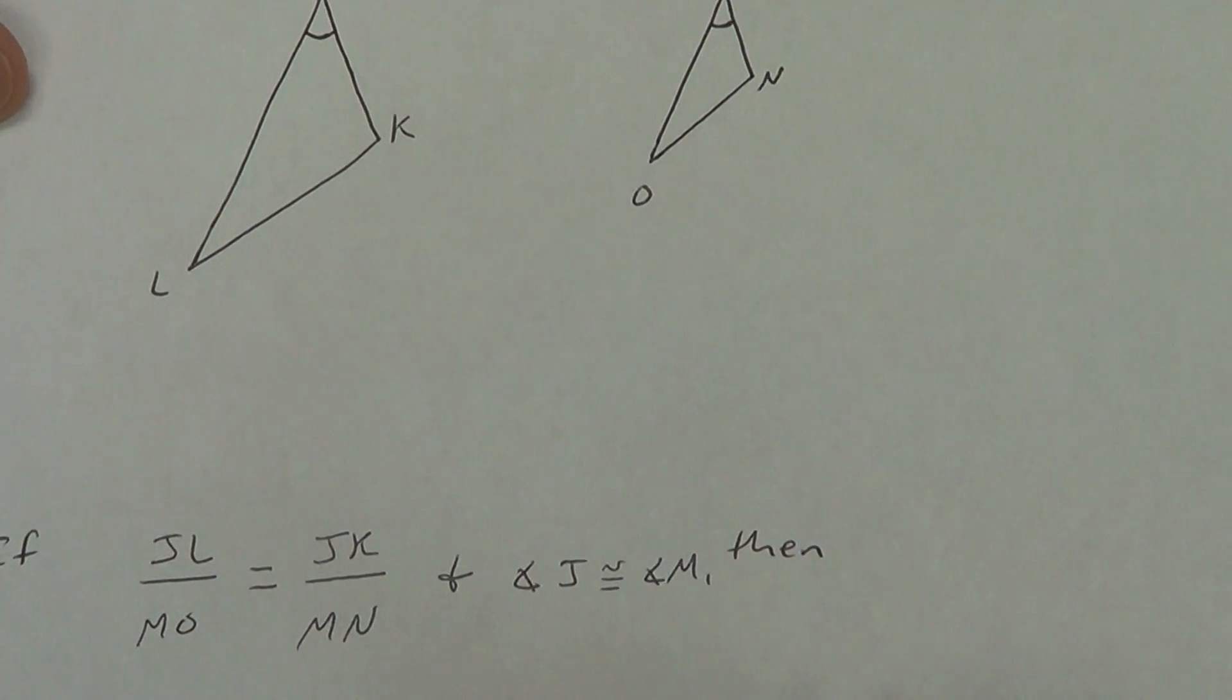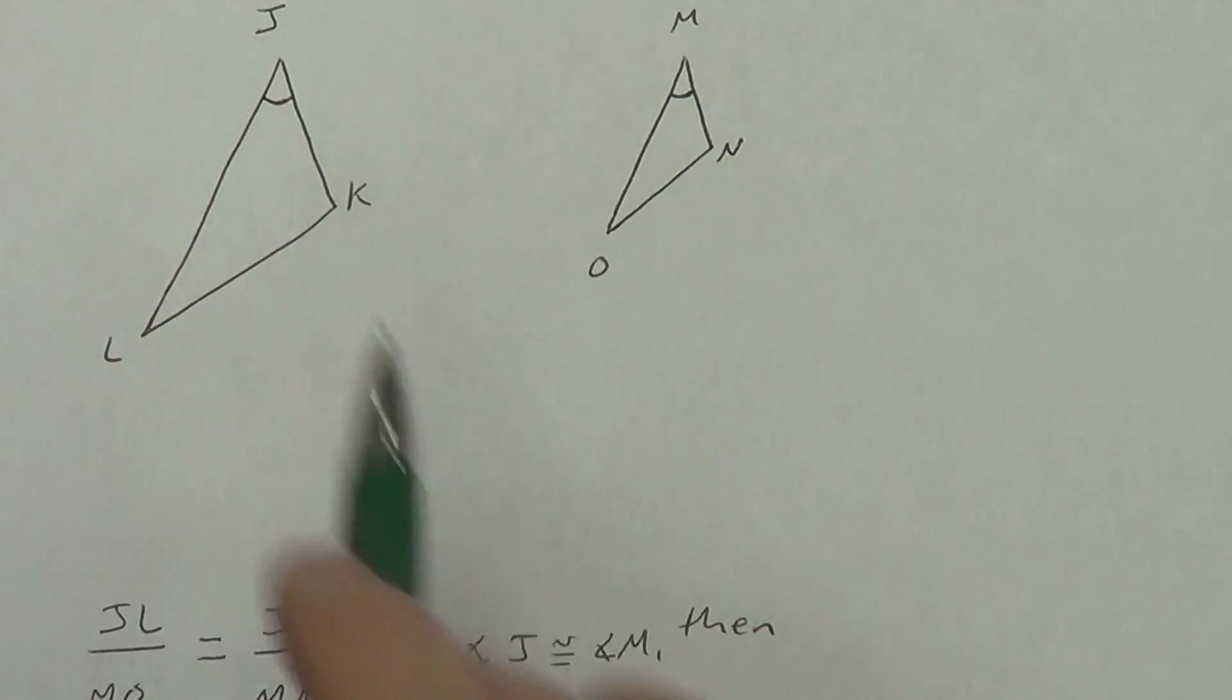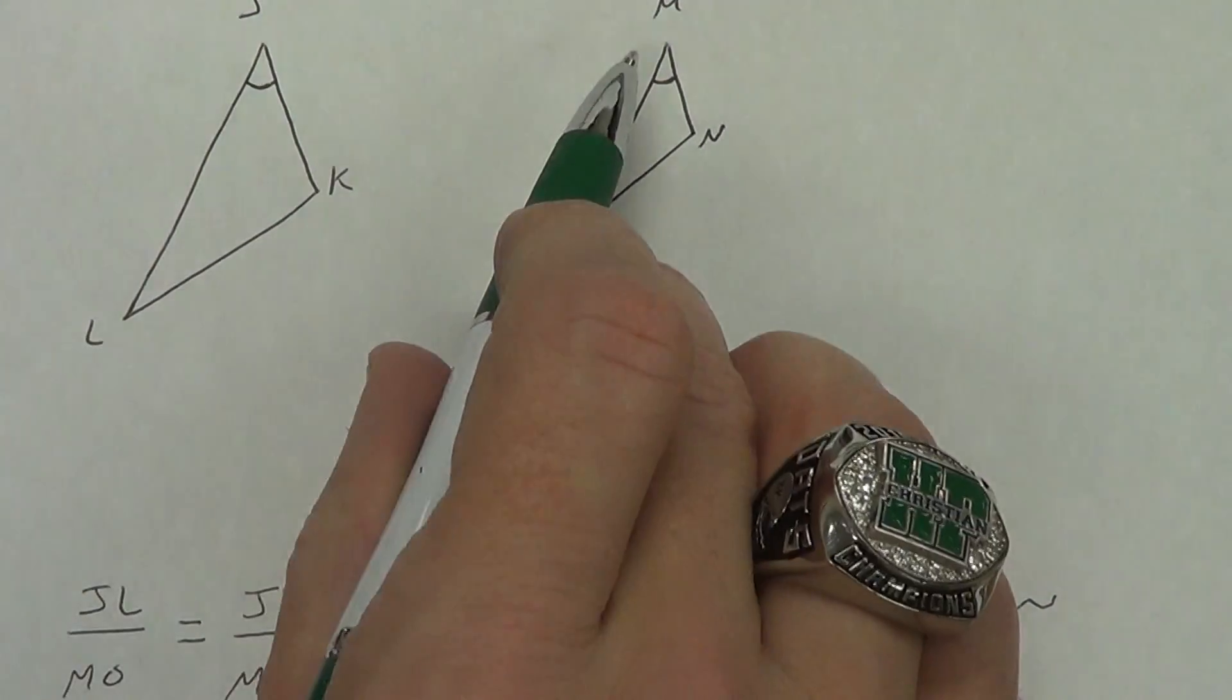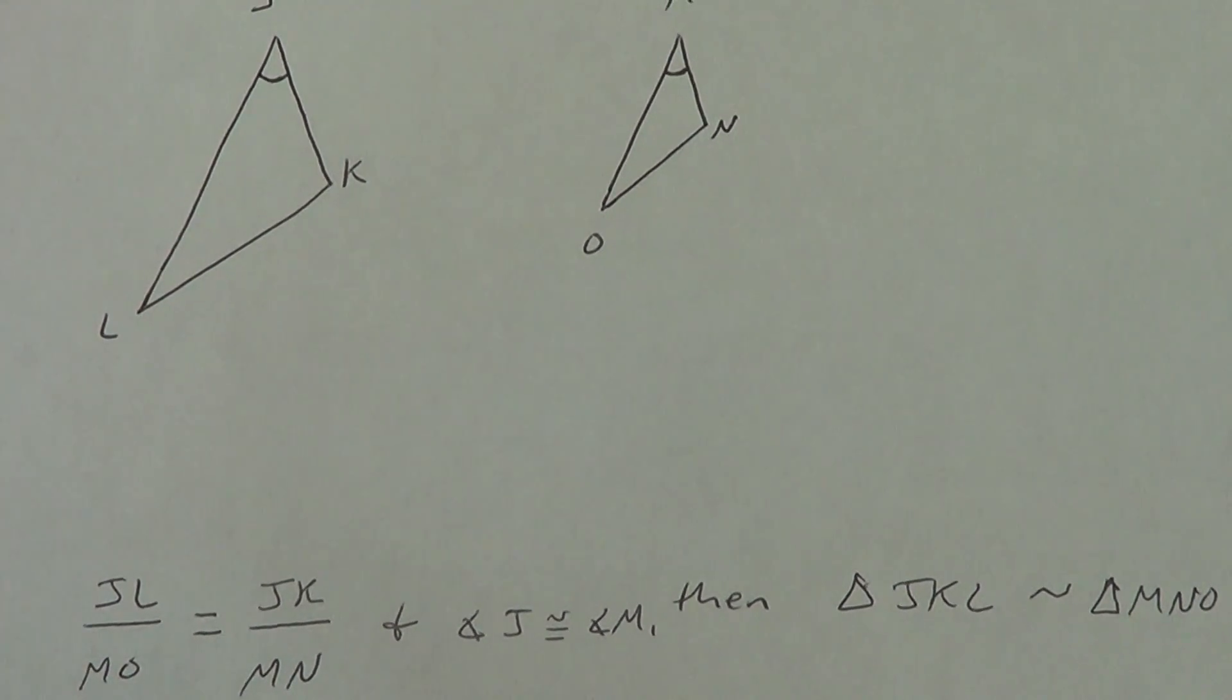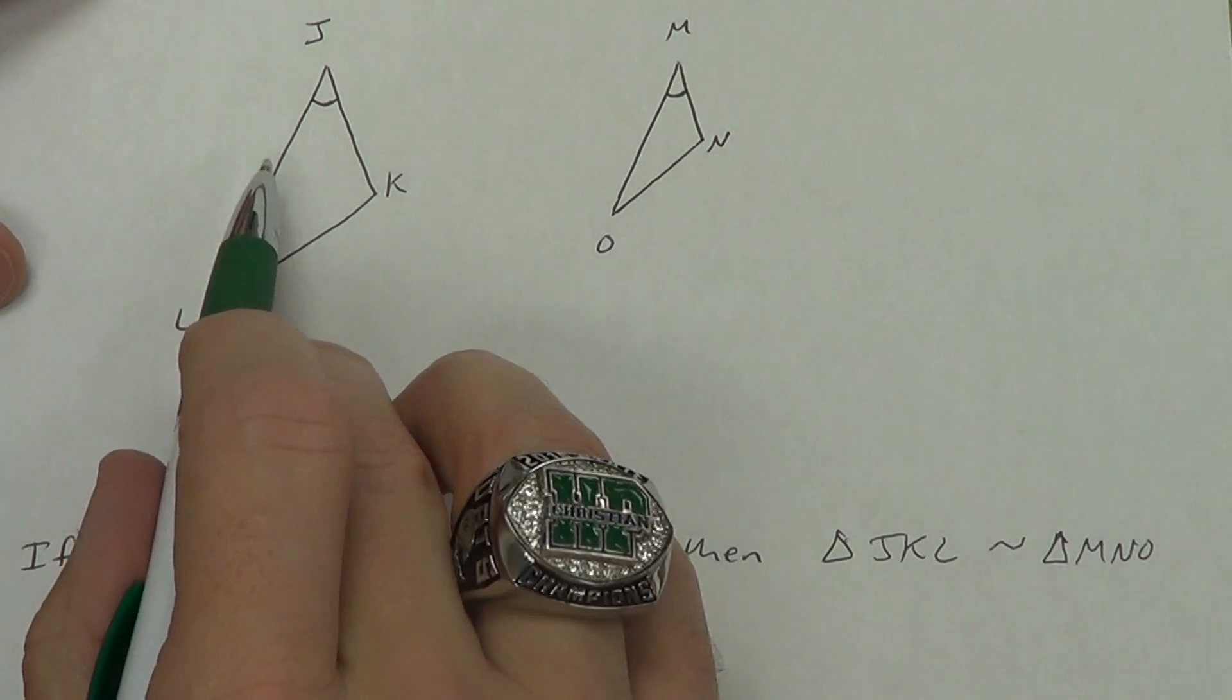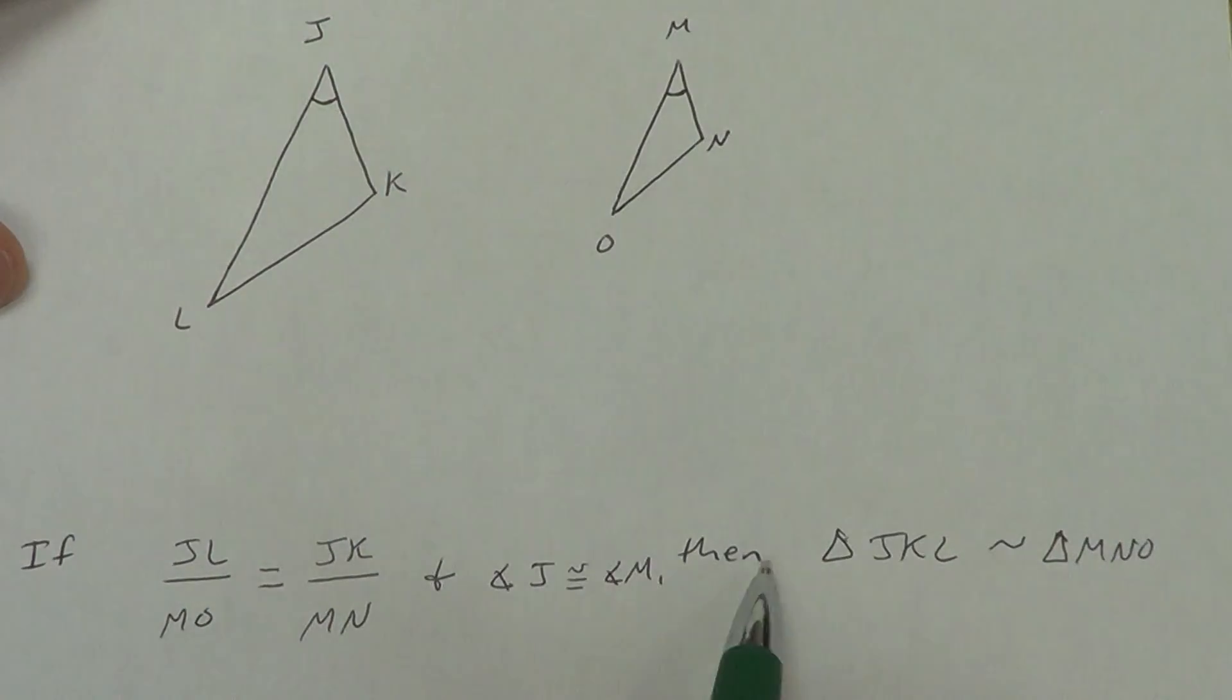You'll notice we don't put marks on these because this is not congruent to that. It's proportional. We don't really have a mark for that. JL, MO, JK, MN, and we need the included angle to be congruent. So angle J is congruent to angle M. Then, what do we say? The triangles are similar. Triangle JKL is similar to triangle MNO. So that's kind of how that one works. I got two sets of proportional sides. I got one angle that's congruent, but it has to be in the order of side, angle, side. Then, the triangles are similar.